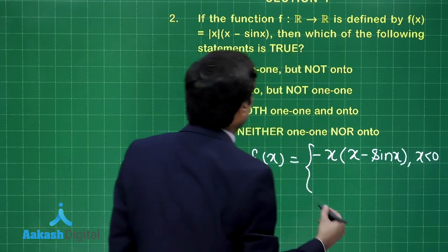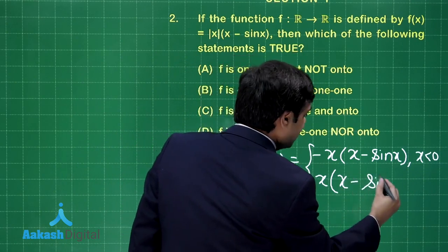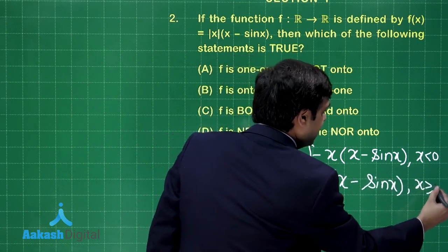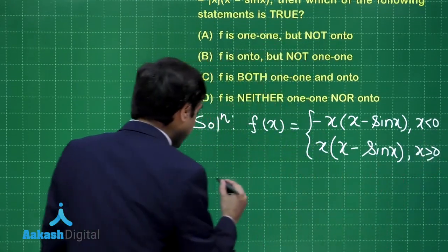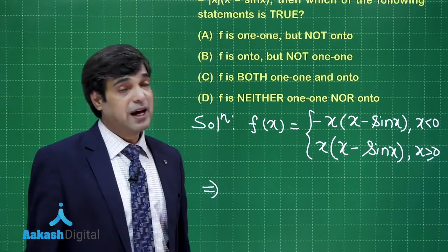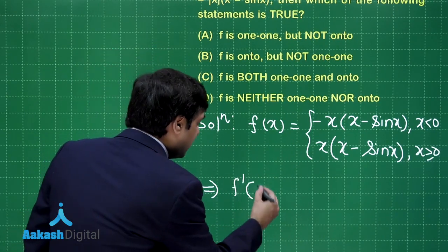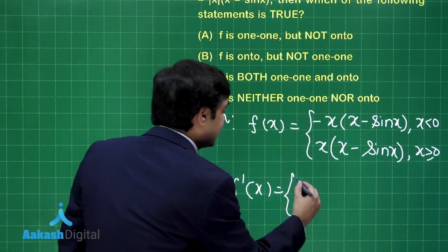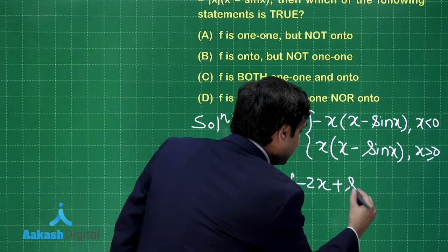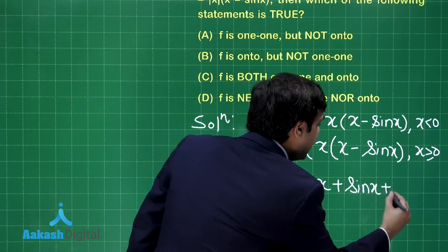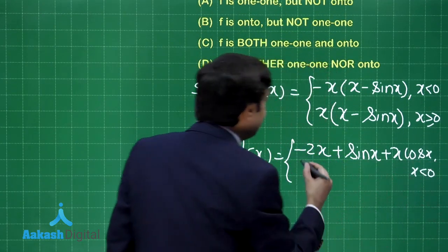Now, to check if f is one-one, we can look at the derivative to check the increasing or decreasing nature. Going for the first derivative when x < 0: f′(x) = −2x + x sin x + sin x + x cos x.